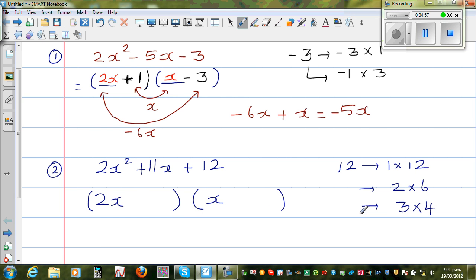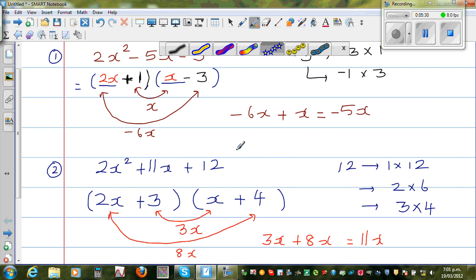So 3 and 4. So let us try plus 3 and plus 4. Will this work? You always check whether it's working. So 3 times x is 3x, and 2x times 4 is 8x. And lo and behold, 3x plus 8x is 11x. So this is fine. So you can give yourself a star.